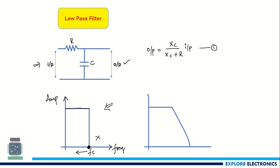Practically, the frequency response looks like this. Taking amplitude on the Y-axis and frequency on the X-axis, we can measure the cutoff frequency by taking 3 dB lower than the maximum — that is 0.707 times the amplitude. Plotting this gives us the cutoff frequency Fc. Below this frequency all signals are passed; above this frequency the signals are rejected. This is about the low-pass filter.